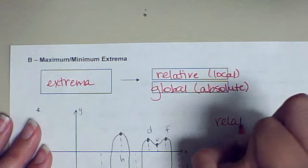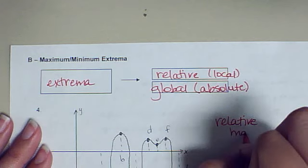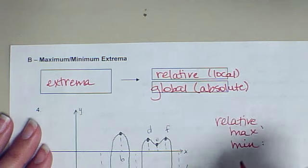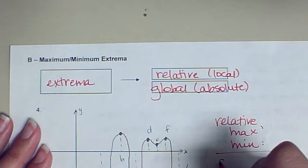So we have the relative, maximum, and minimum. We're going to do that on this little graph over here to the side that I've sketched for you. And then we have the absolute.